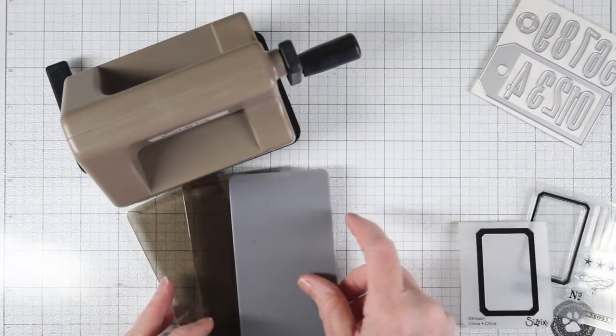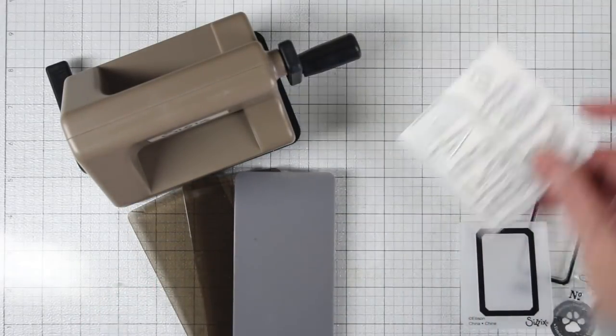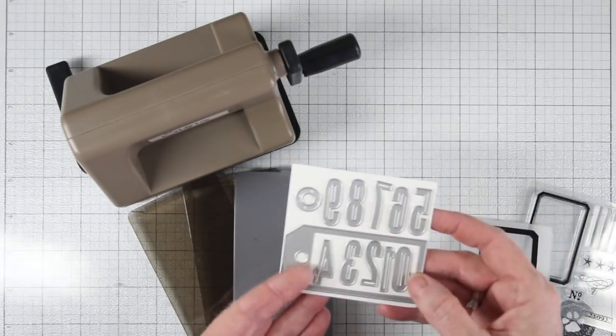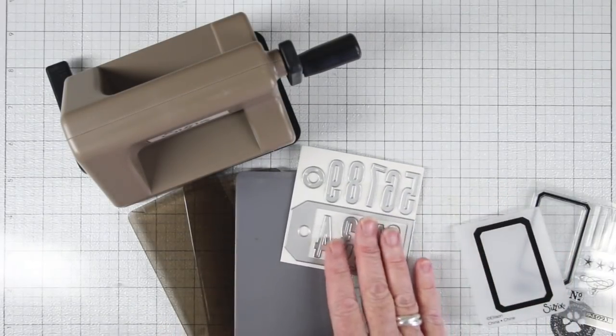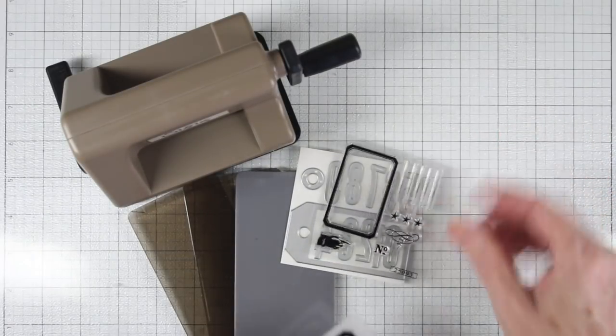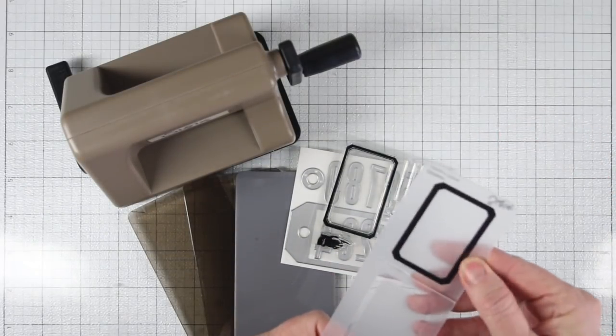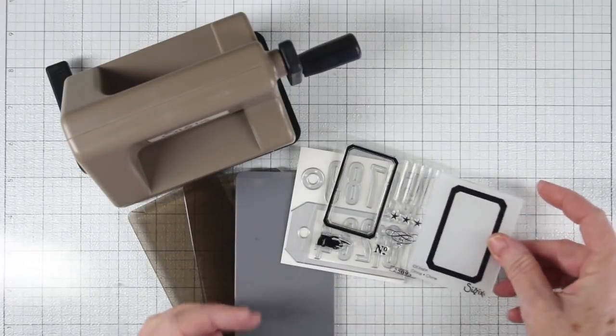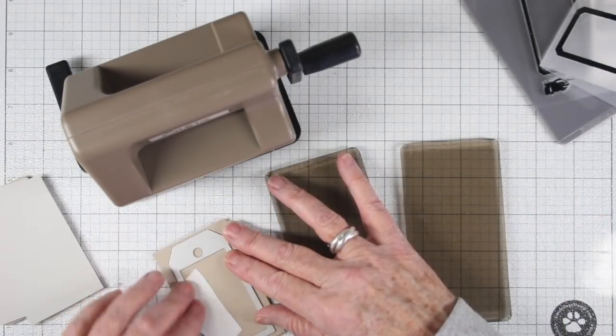You get two cutting plates with the sidekick and those are about two and a half inches by five inches long and also an embossing plate so you can use it with an embossing folder. The dies included are a tag and the numbers one through zero and also a hole enforcer. You also get a small set of stamps and an embossing folder in the shape of a label that fits right onto the tag.